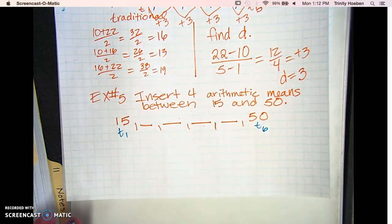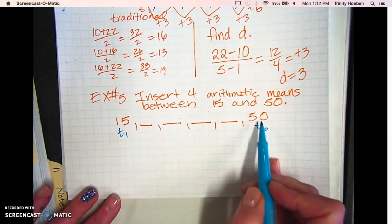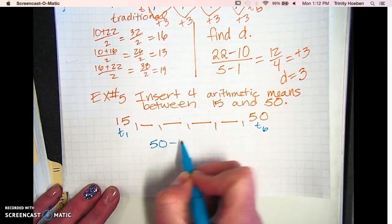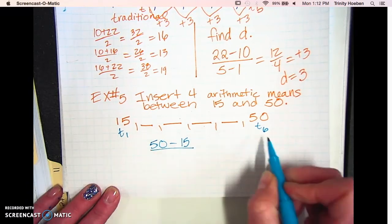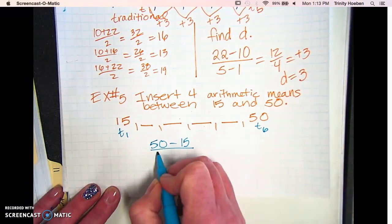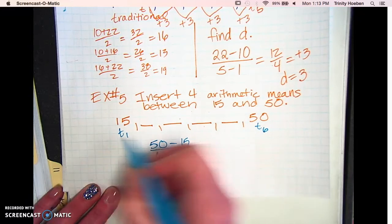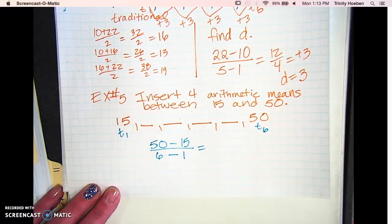So I'm going to find the difference. I'm simply going to take the value of term six, which is 50, minus the value of term one, which is 15, and divide it by the sixth term minus the first term, and then simplify.